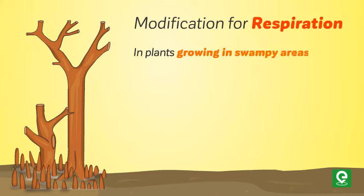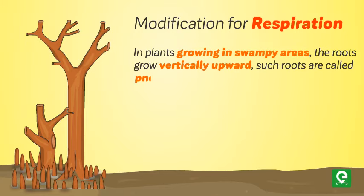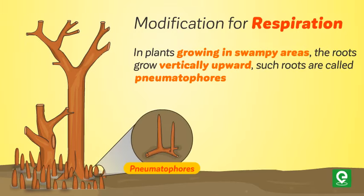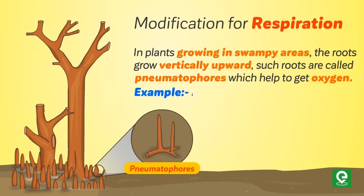Modification for respiration: in plants growing in swampy areas, the roots grow vertically upward. Such roots are called pneumatophores, which help to get oxygen. Example: Avicennia germinans.